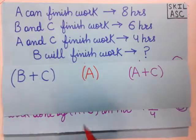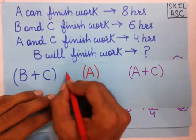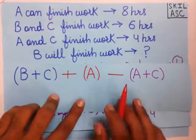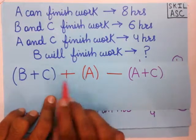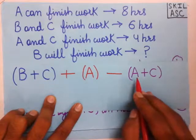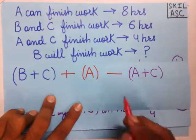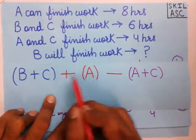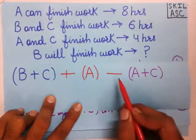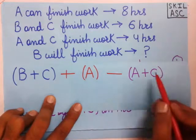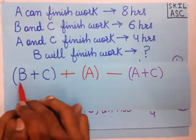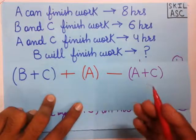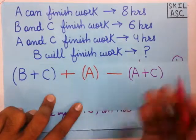What we will do is put a plus sign in front of the second statement's letters and a minus sign in front of the third statement's letters. Notice that A plus C will be cancelled out by the other A plus C because one has a plus sign and the other has a minus sign. So we will have only B remaining.